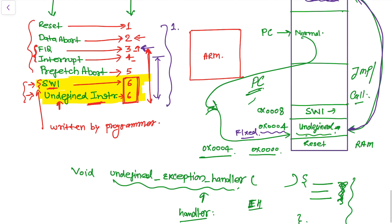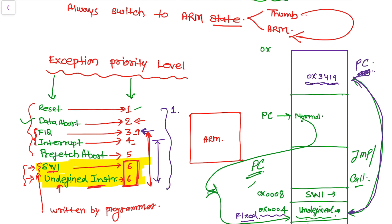The Data Abort exception occurs when the memory controller or memory management unit indicates that an invalid memory address has been accessed. For example, if the maximum memory address is 0x39FF and the processor tries to access 0x4000, there is no physical memory at that address — this goes out of bounds and the Data Abort exception will occur.